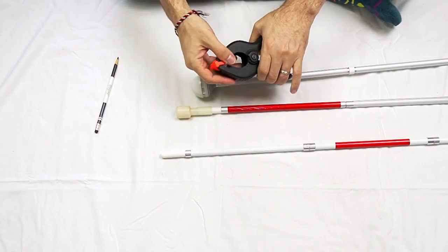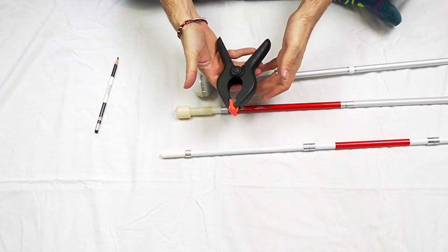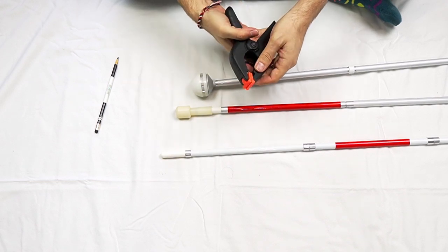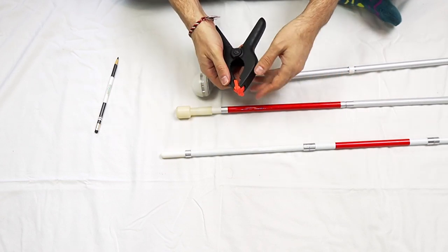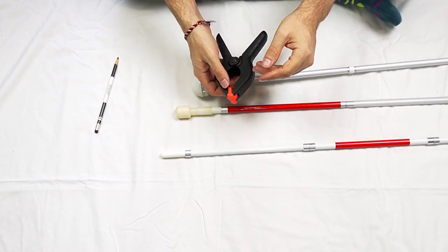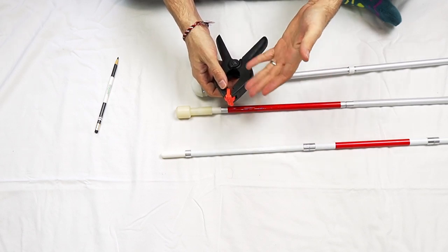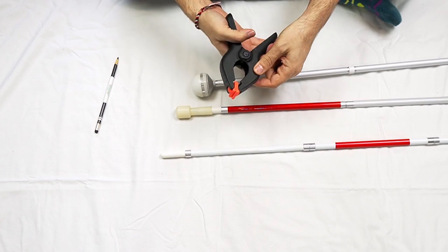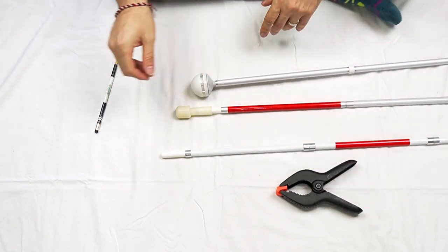One is to use some sort of clamp. This is a shop clamp, super durable. You can find these at hardware stores or big box stores. You could also use a binder for paperwork folders. You can find those at office supply stores. Anything that's going to clamp on it and not let that cord slip back into the cane.